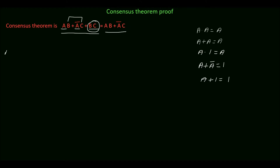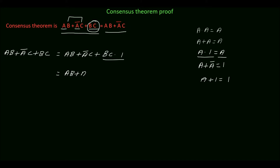Taking the left hand side: AB + A'C + BC. We rewrite BC as BC·1, because A·1 = A, so BC·1 is the same as BC. In the third product term we only have variables B and C — we don't have variable A — so we write the 1 as (A + A'), because A + A' = 1 from the basic theorems of boolean algebra.